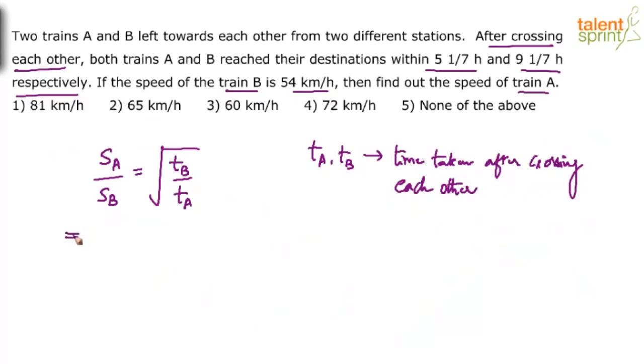Now substitute the values. So speed of train A has to be calculated, divided by speed of train B is 54, equals to time taken by train B. What is the time taken by train B? 9 1/7. So 9 1/7 divided by time taken by train A, 5 1/7.